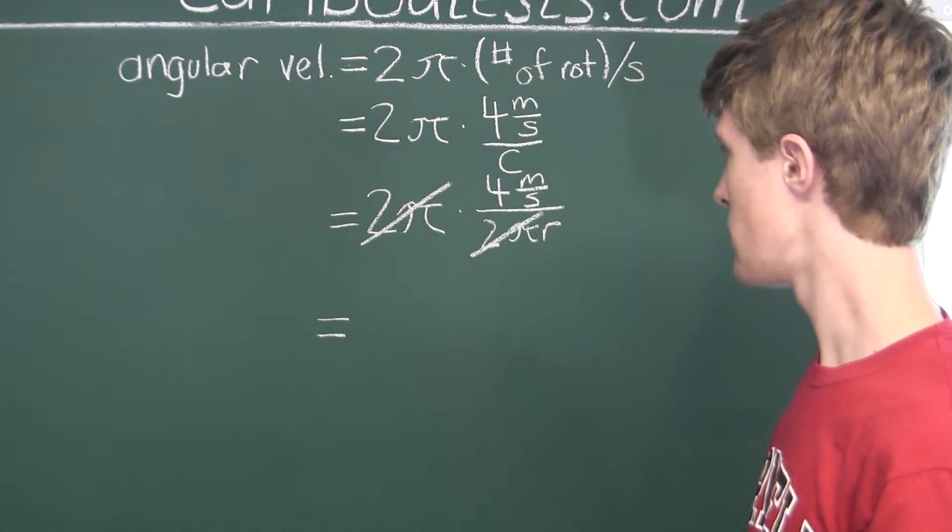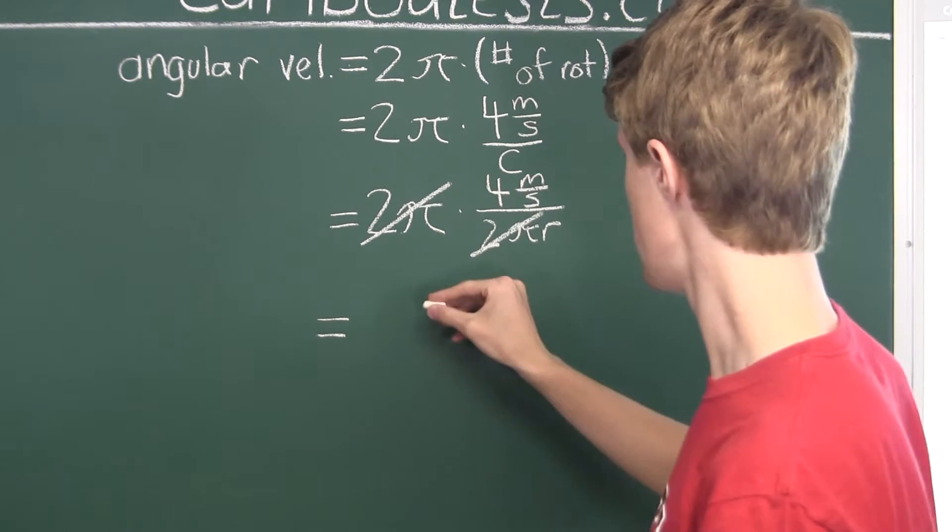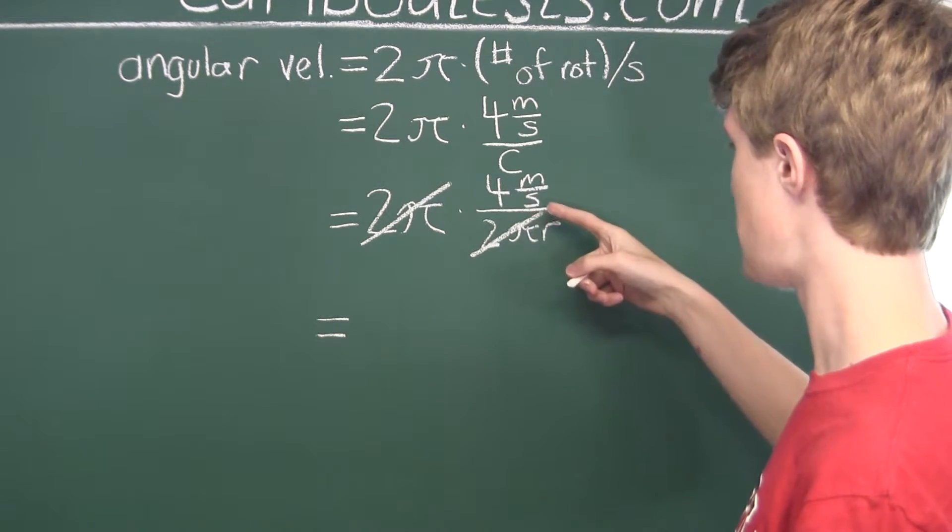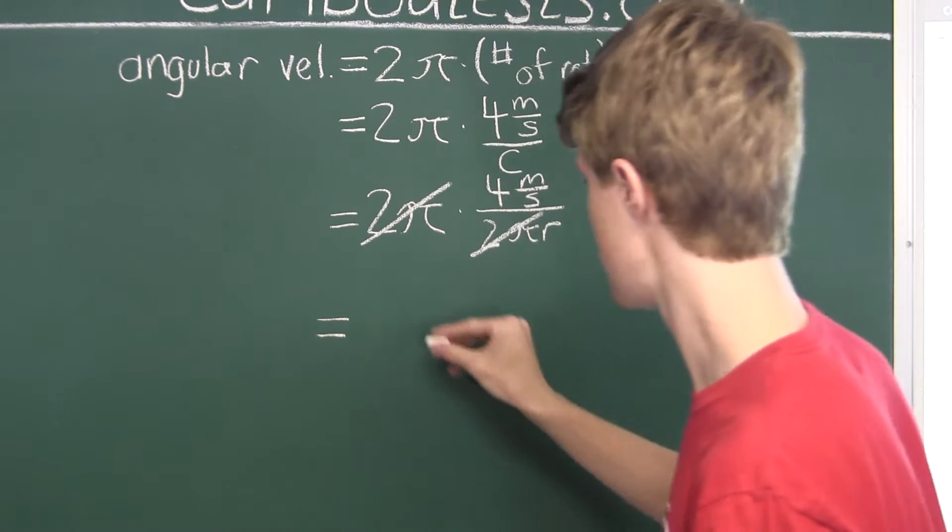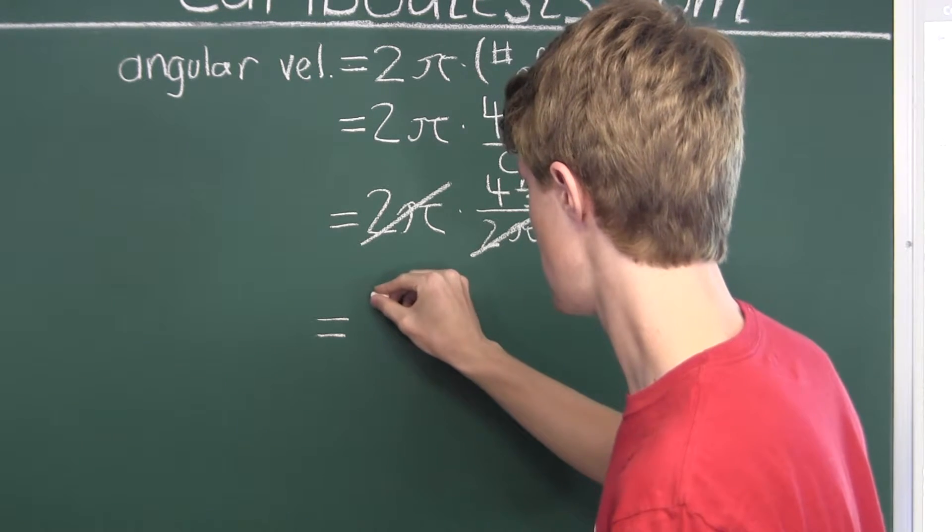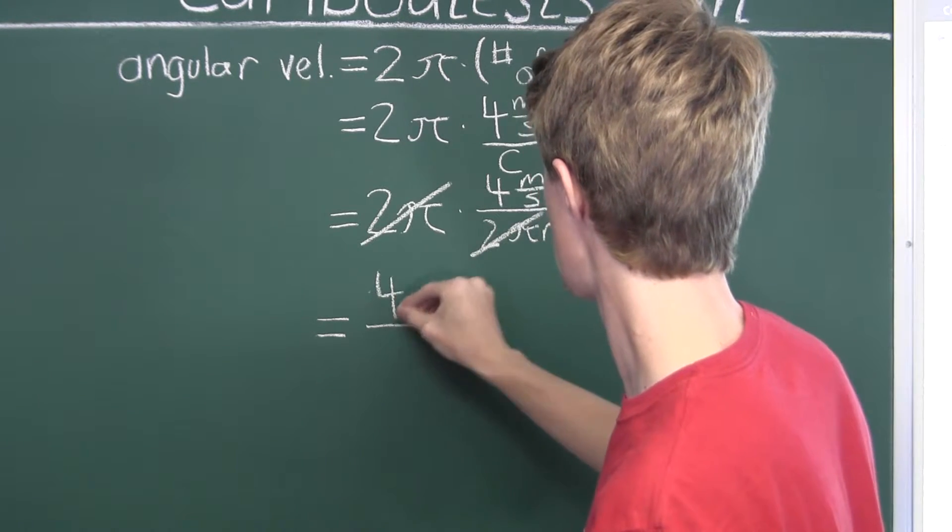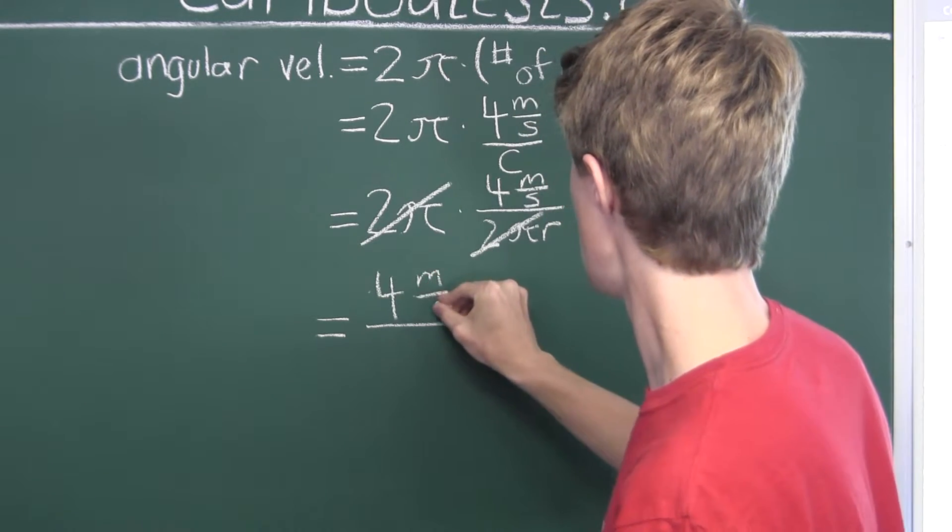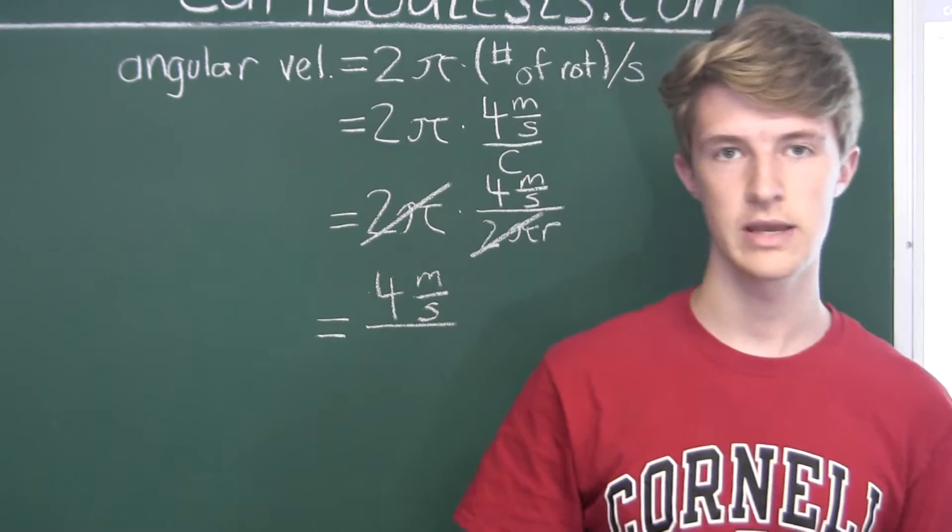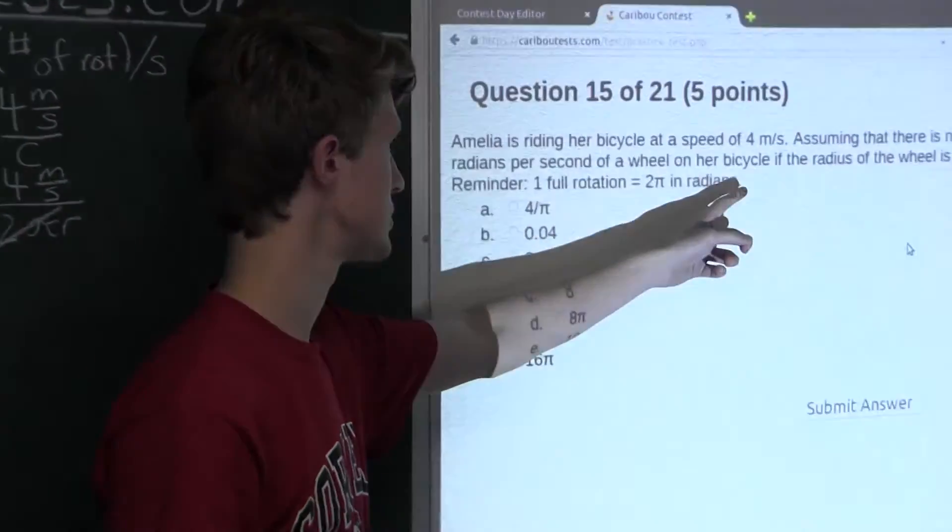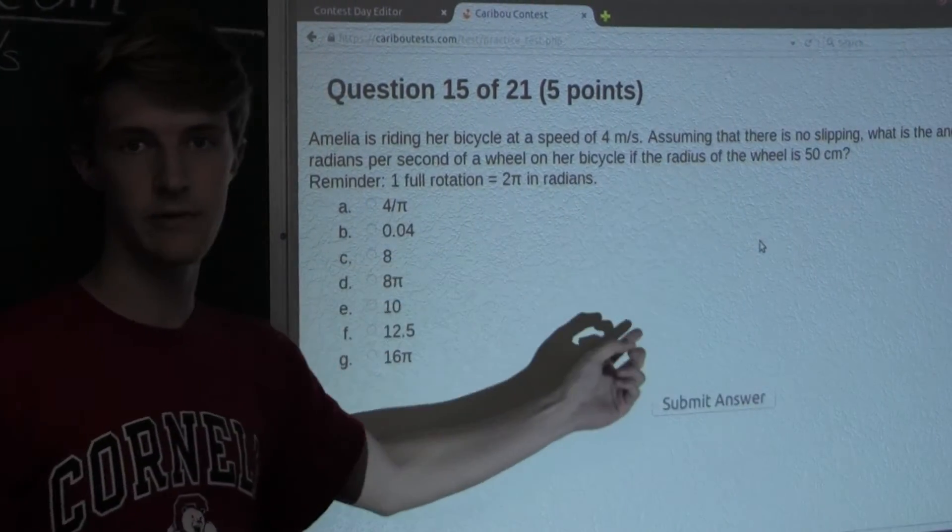So, what we are left with is 4 meters per second divided by r. And now, the radius, we already know from the question, the radius of the wheel is 50 centimeters.